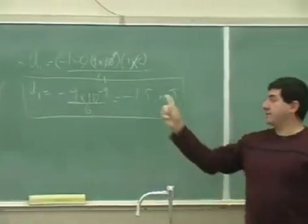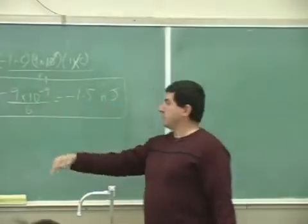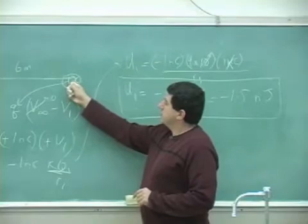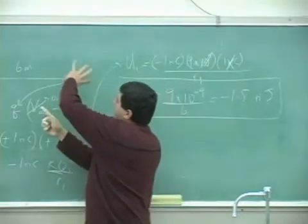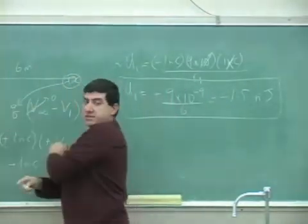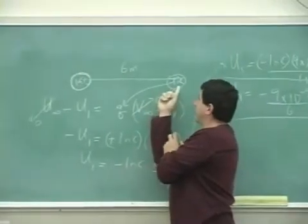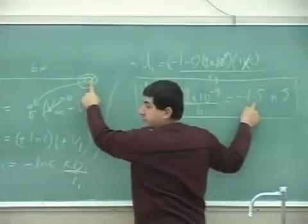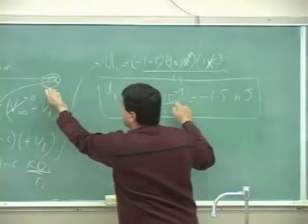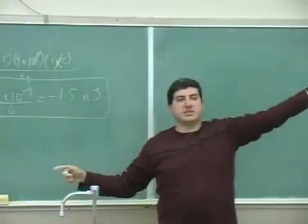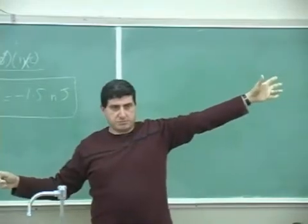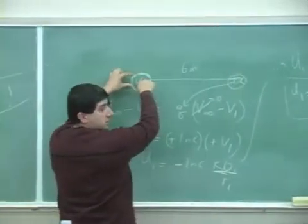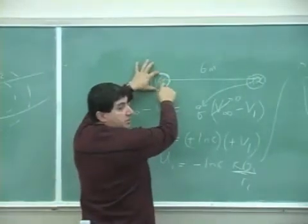The potential energy of this system — in other words, the potential energy of this charge in the potential field set up by the other charge — is negative 1.5 nanojoules with respect to infinity, which we set to zero joules. Now, could we use the opposite argument? What if the other charge sets up a potential — what is the potential energy of the first charge with respect to infinity?